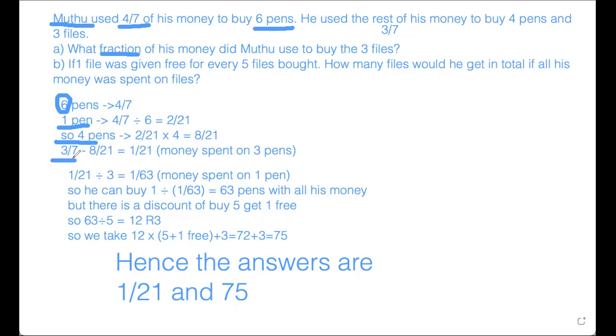So 4 pens equals to 2 over 21 times 4 equals to 8 over 21. So this is the money spent on the 4 pens. So we know that 4 pens plus 3 files equals to 3 over 7. As you can see here.